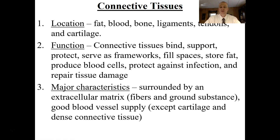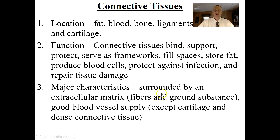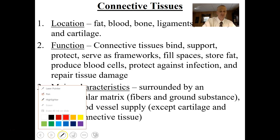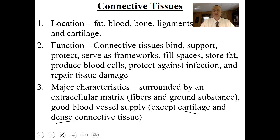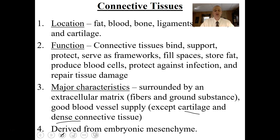Their characteristics are very different than epithelial tissues. For example, they're surrounded by an extracellular matrix. This matrix is made of what we call fibers and ground substance. The fibers are different kinds of proteins. The ground substance can range from calcium all the way up to water. They have a good blood supply, except for cartilage and dense connective tissue making up tendons and ligaments. These tissues are derived from what we call embryonic mesenchyme — a different tissue than what epithelial tissues come from embryonically.